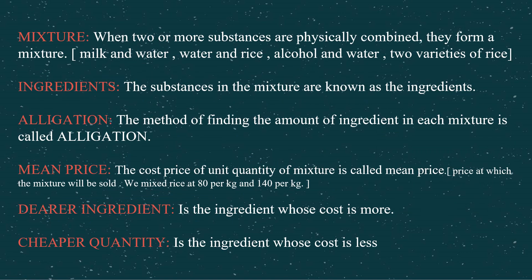Let us discuss some of the terms used in this concept. The first one is mixture. When we mix two or more substances physically — not chemically, just physically mixing them — the resultant is called a mixture. It can be a mixture of milk and water, alcohol and water, acid and water, or anything. You can even mix two varieties of dal or two varieties of rice. The resultant is called a mixture.